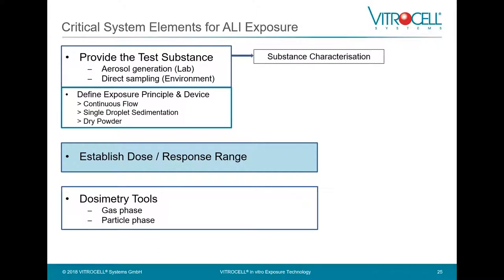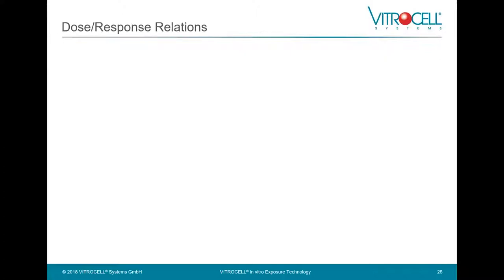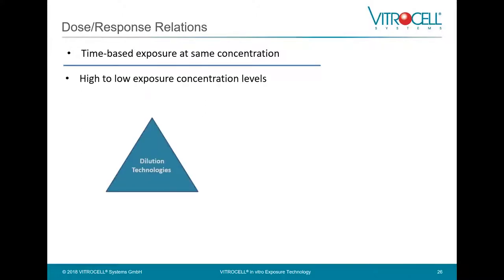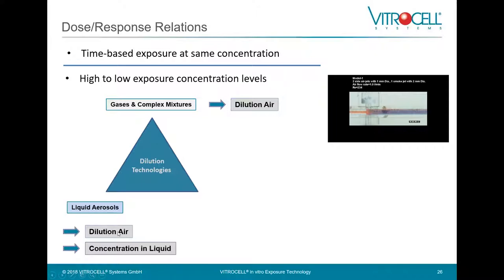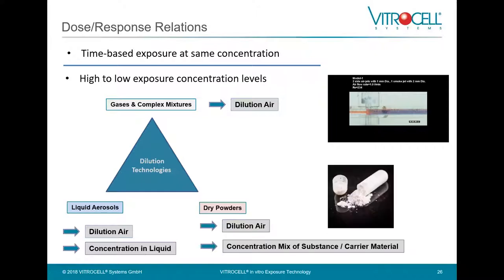To establish a dose-response range, you can start with a time-based exposure at the same concentration — exposing for 20 minutes up to 4 hours — and compare the time-based effect. Alternatively, you can work with high-to-low exposure concentration levels. For gases and complex mixtures, this is done by adding dilution air dynamically, varying the substance concentration. Liquid aerosols can also be diluted with air or by working with the concentration in the liquid. Dry powders can similarly be diluted with air or by adjusting the concentration mix of the substance with the carrier material.